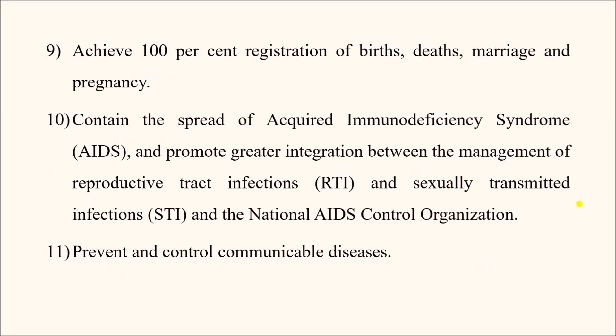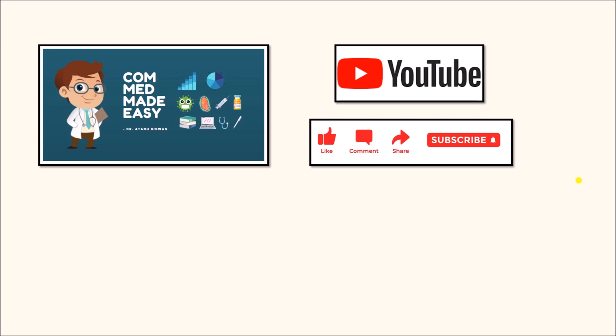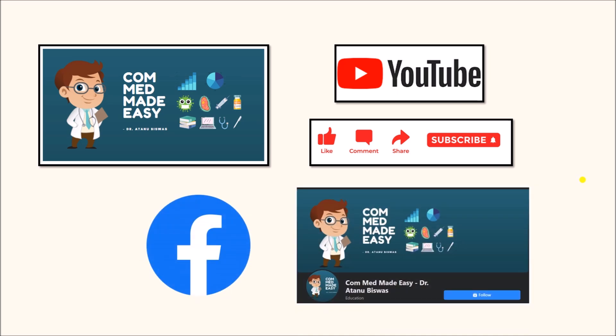If we do not set any target, we are not going to get close to it — that is why these objectives and timelines were set. In our next video we shall learn about the different methods of family planning. Today we discussed the National Population Policy, the objectives of different policies to control the growth rate, and certain terminologies in the context of family planning and population control. Please subscribe, share this video with your batch mates, juniors, and friends, and follow our Facebook page. Take care and see you in the next video.